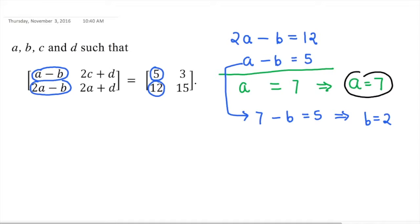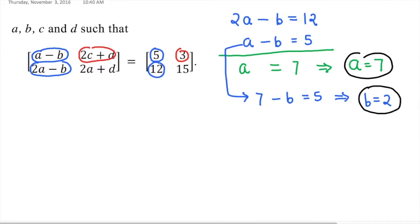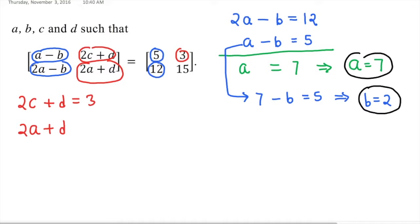B is equal to 2. Now for C and D, just compare: 2C plus D is equal to 3, and 2A plus D is equal to 15.